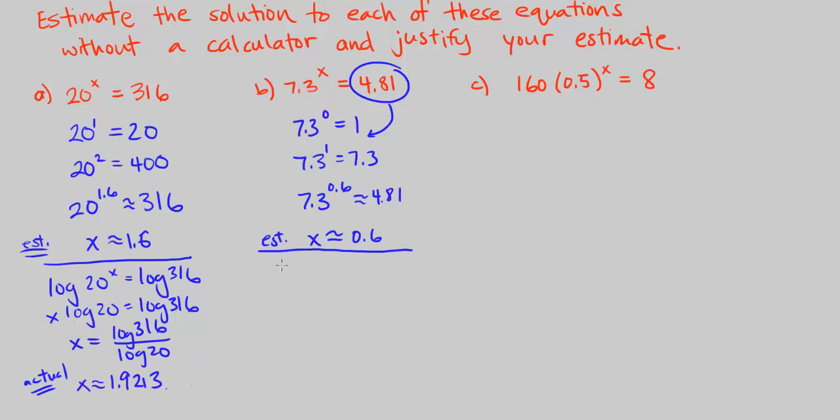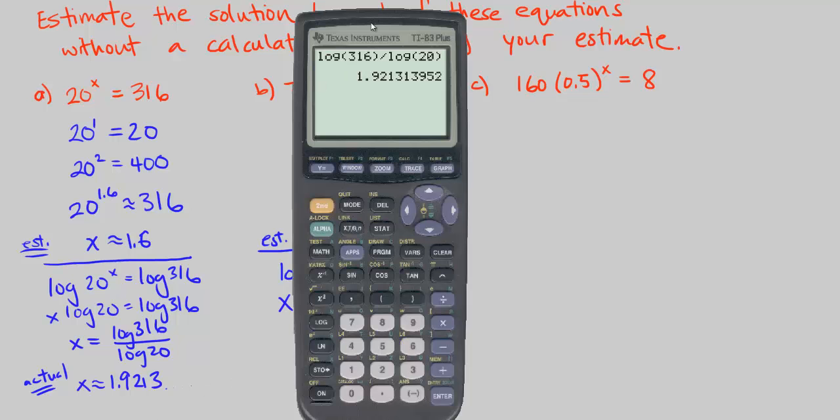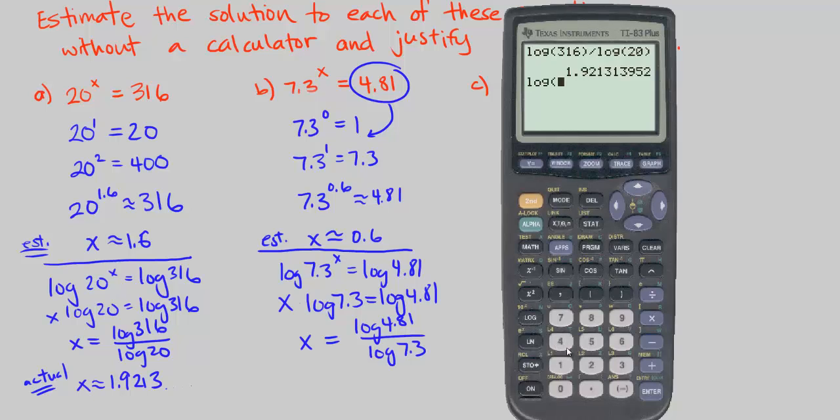So let's take log of both sides. Log of 7.3 to the power of x equals log 4.81. Then we bring down the x. x times log of 7.3 equals log of 4.81. We can divide both sides by log of 7.3. We get x equals log of 4.81 divided by log of 7.3. We can plug these into our calculator. They're all base 10. Log of 4.81 divided by log of 7.3.